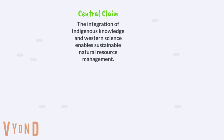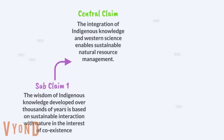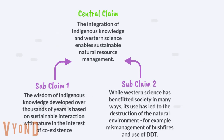Let's look at an example to understand how this works. Here is our central claim: the integration of Indigenous knowledge and Western science enables sustainable natural resource management. The first subclaim to support it: the wisdom of Indigenous knowledge, developed over thousands of years, is based on sustainable interaction with nature in the interest of coexistence. The second subclaim: while Western science has benefited society in many ways, its use has led to the destruction of the natural environment — for example, mismanagement of bushfires and use of DDT.